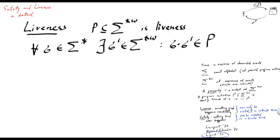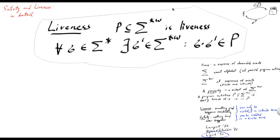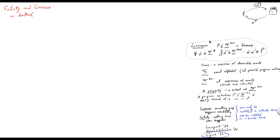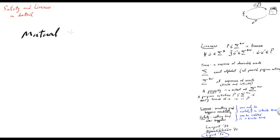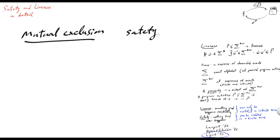For example, the fundamental mutual exclusion property — which says no two processes are allowed to be in their critical sections at the same time — is a safety property, because once it is violated, it cannot be corrected.